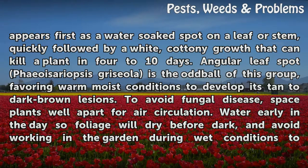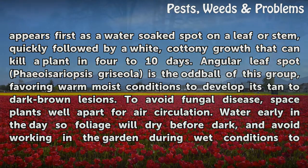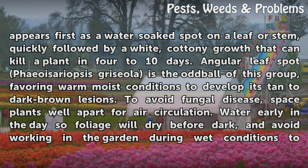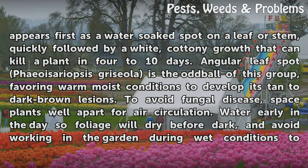White Mold, Sclerotinia sclerotiorum, appears first as a water-soaked spot on a leaf or stem, quickly followed by a white, cottony growth that can kill a plant in 4 to 10 days. Angular leaf spot, Phaeoisariopsis griseola, is the oddball of this group, favoring warm, moist conditions to develop its standard dark brown lesions.